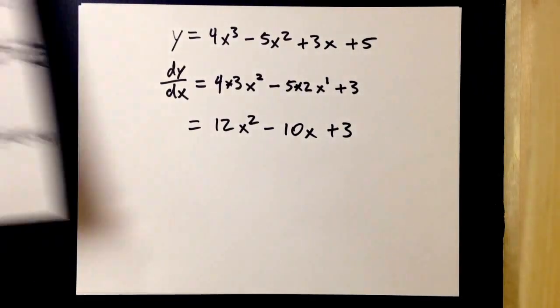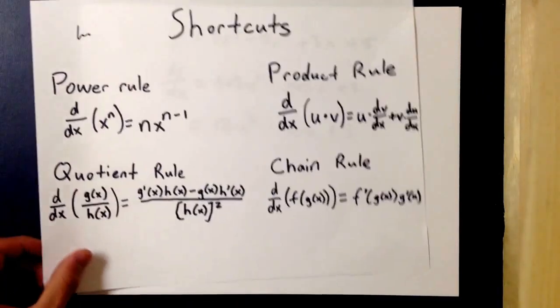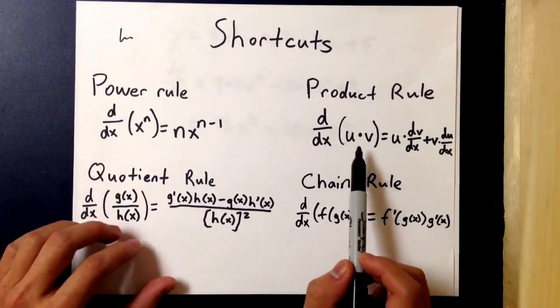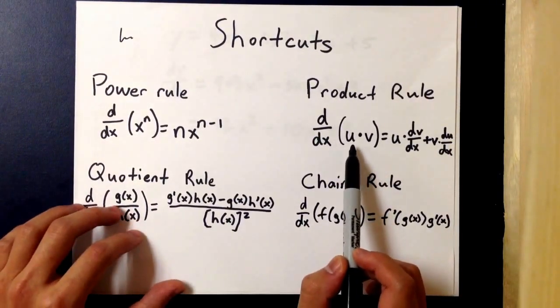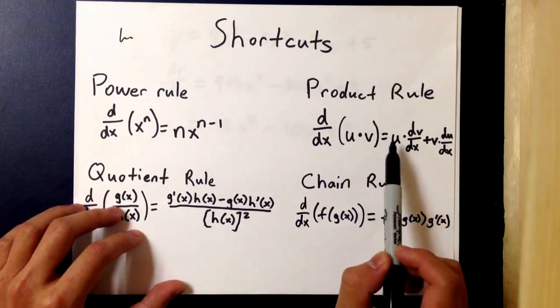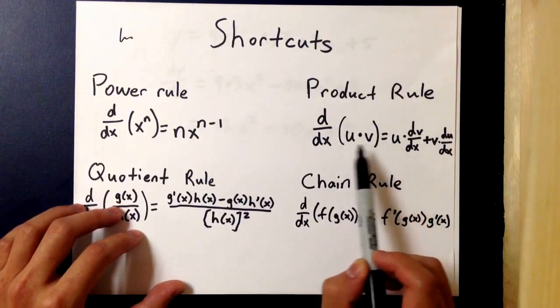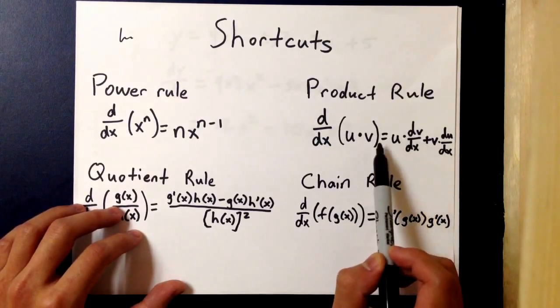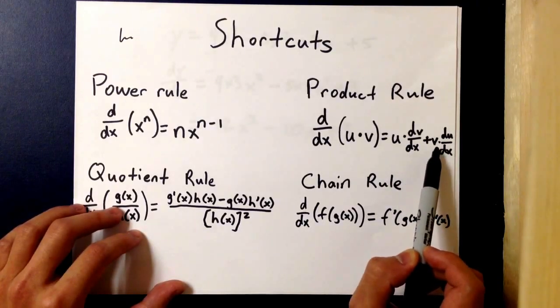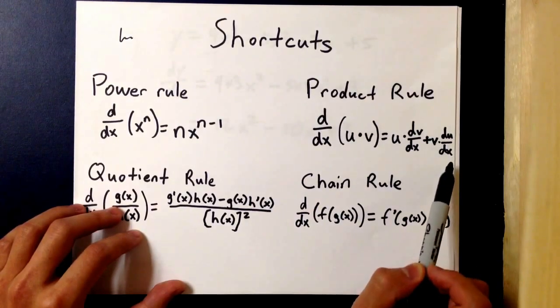Next up, we have the product rule, and what that says is the derivative of function u times v equals the original u times the derivative of v, dv/dx, plus the function v times du/dx.